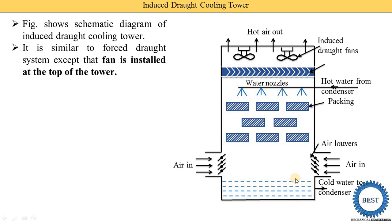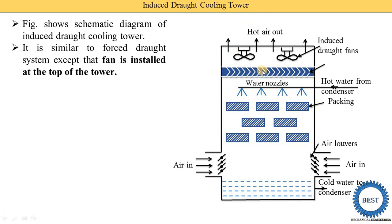In the last video, I explained the forced draft cooling towers. In a forced draft cooling tower, we install the fan at the side or bottom. But in this diagram, you see we install the fan at the top of the tower.